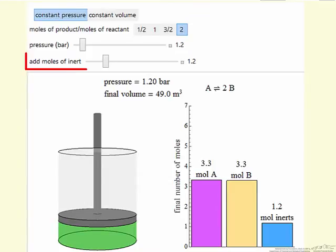We also have the option of adding inert to see what effect that has on the equilibrium. The simulation calculates the final volume, and the piston moves up or down as we change the starting pressure or add more inert to the system.